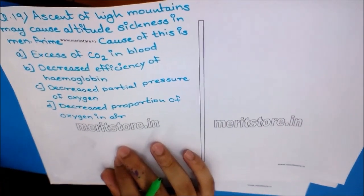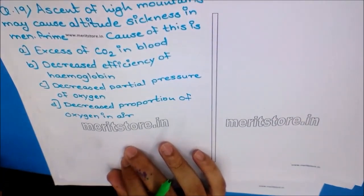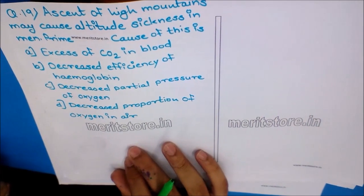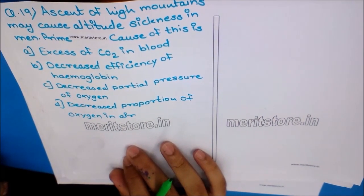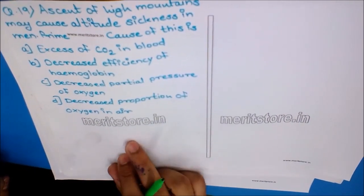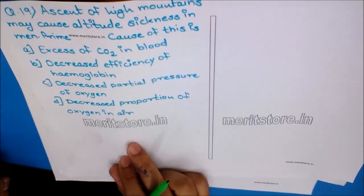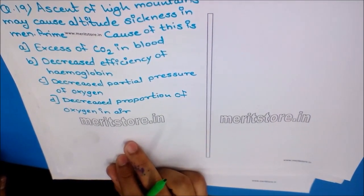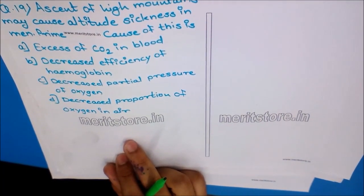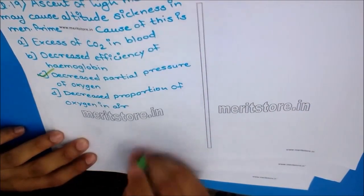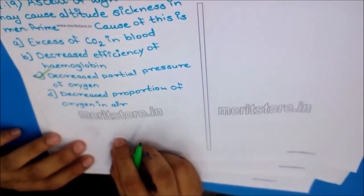Question 19: Ascent of high mountains may cause altitude sickness in men. The prime cause of this is? Options: A) Excess of CO2 in blood, B) Decreased efficiency of hemoglobin, C) Decreased partial pressure of oxygen, D) Decreased proportion of oxygen in air. The answer is option C — decreased partial pressure of oxygen.